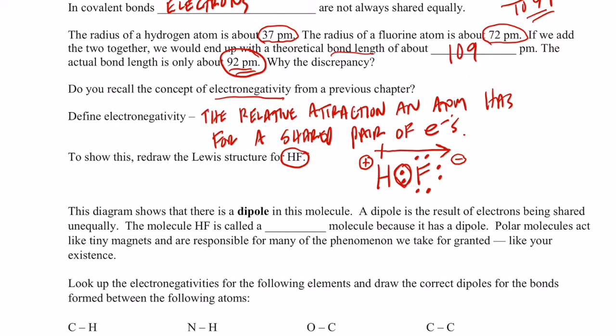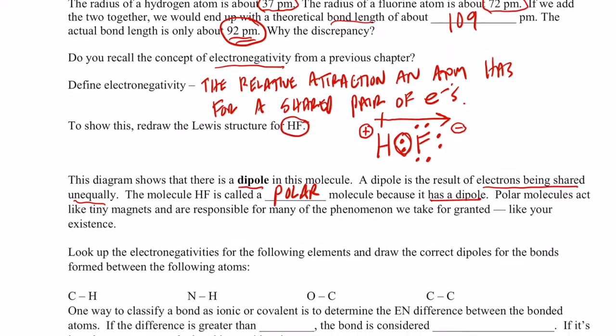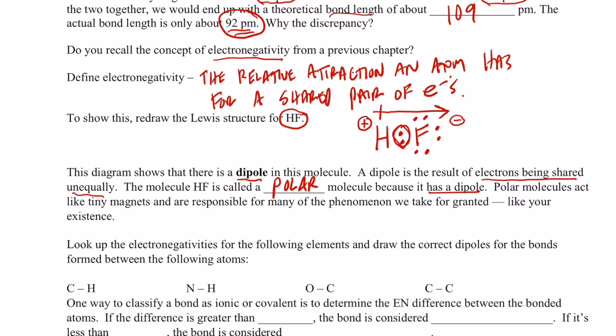Now, this diagram shows that there's something called a dipole. A dipole is the result of electrons being shared unequally. If they're shared unequally, the bond is called a polar bond. If the molecule has electrons being shared unequally, the molecule is called a polar molecule because it has a dipole. Polar molecules act like tiny magnets, and they're responsible for many of the phenomenon we take for granted, like our existence.